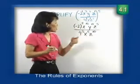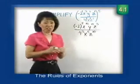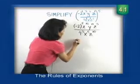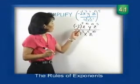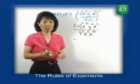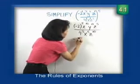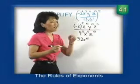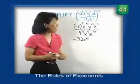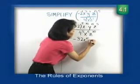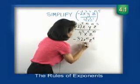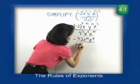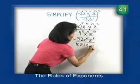Now let's simplify the numbers. Negative 2 to the fifth power has 5 negative signs — an odd number — so the result is negative. 2 to the fifth is 2×2×2×2×2, which equals 32. y to the zero equals 1 by the zero exponent rule, so we don't need to show it. In the denominator, 4 to the fifth is 1,024. So we have negative 32 x to the fifteenth z to the fifth, over 1,024 x to the fifth z to the tenth.